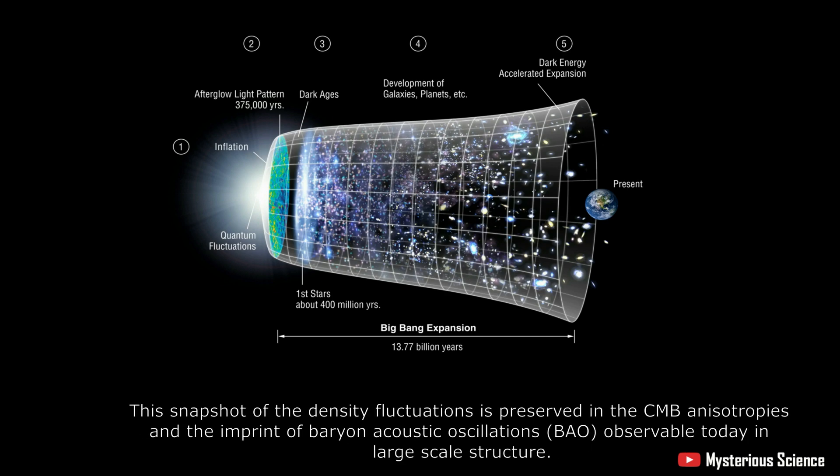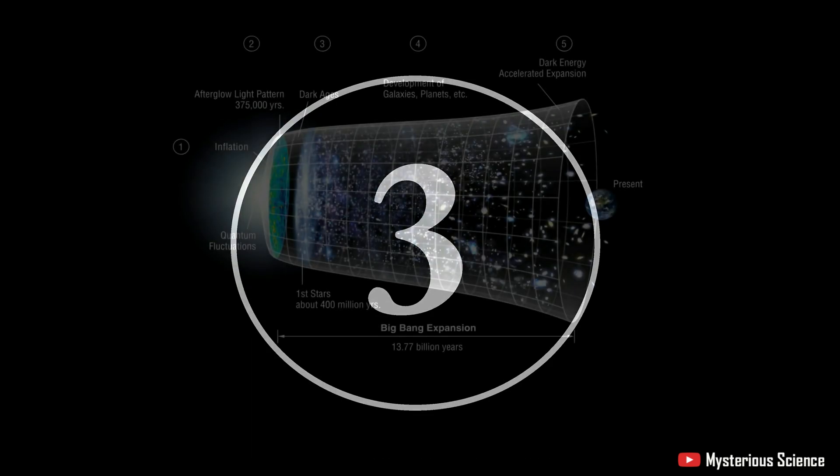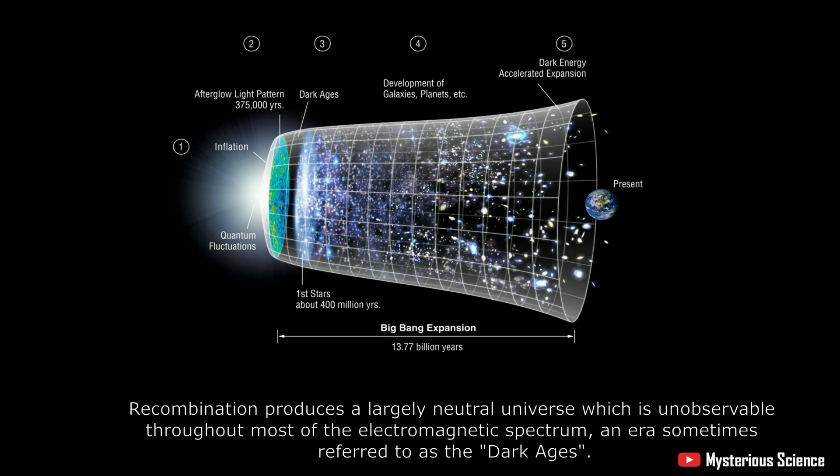This snapshot of the density fluctuations is preserved in the CMB anisotropies and the imprint of baryon acoustic oscillations observable today in large-scale structure. Recombination produces a largely neutral universe which is unobservable throughout most of the electromagnetic spectrum, an era sometimes referred to as the Dark Ages.